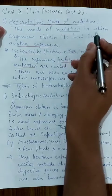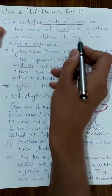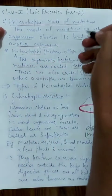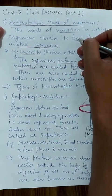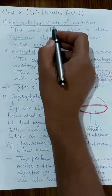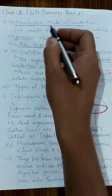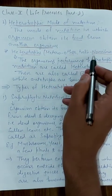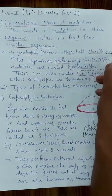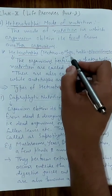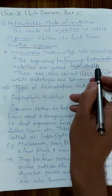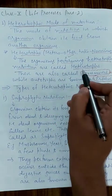The mode of nutrition in which an organism obtains its food from another organism is called heterotrophic mode of nutrition. 'Hetero' means other, 'trophe' means nourishment. So organisms which obtain their nourishment from other organisms are known as heterotrophs.